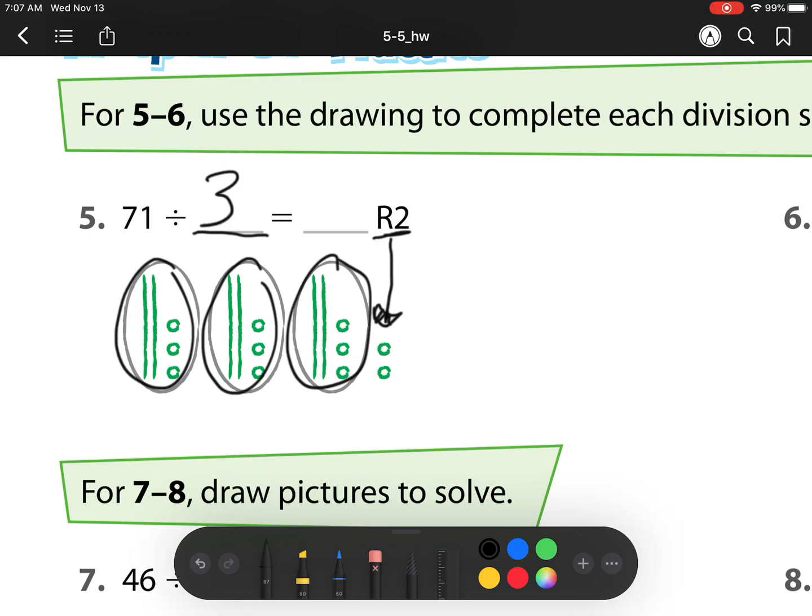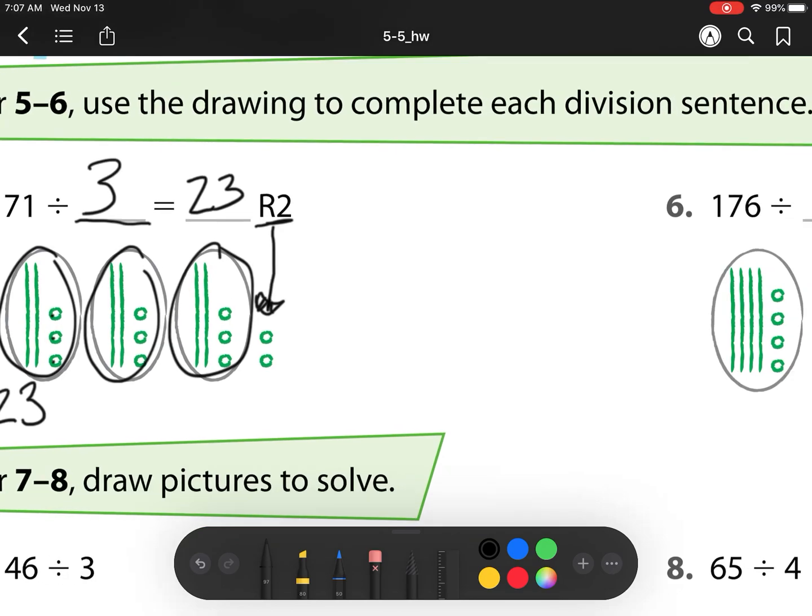So what am I left with? Well, I see each group has 2 tens and 1, 2, 3 ones. So I have 23 with 2 left over.